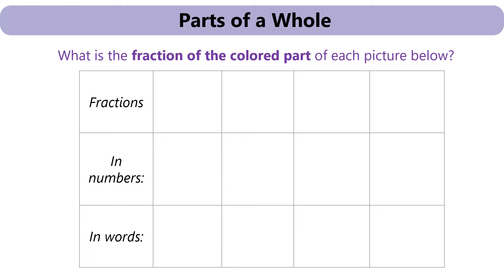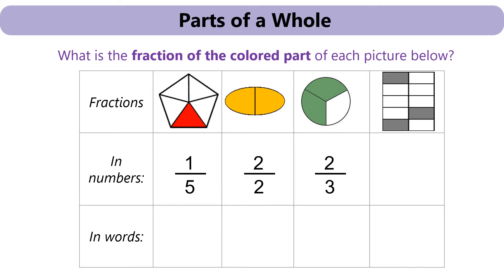Now let's look at some more pictures and learn how to write them in numbers and in words. We have a pentagon, which is one out of five. Because one part is colored, there are five total number of parts. Second one, there are two parts out of two total number of parts. So two out of two. Next one. We have one, two colored out of one, two, three. Last one. One, two, three colored. One, two, three, four, five, six, seven, eight, nine, ten. Three out of ten are colored.